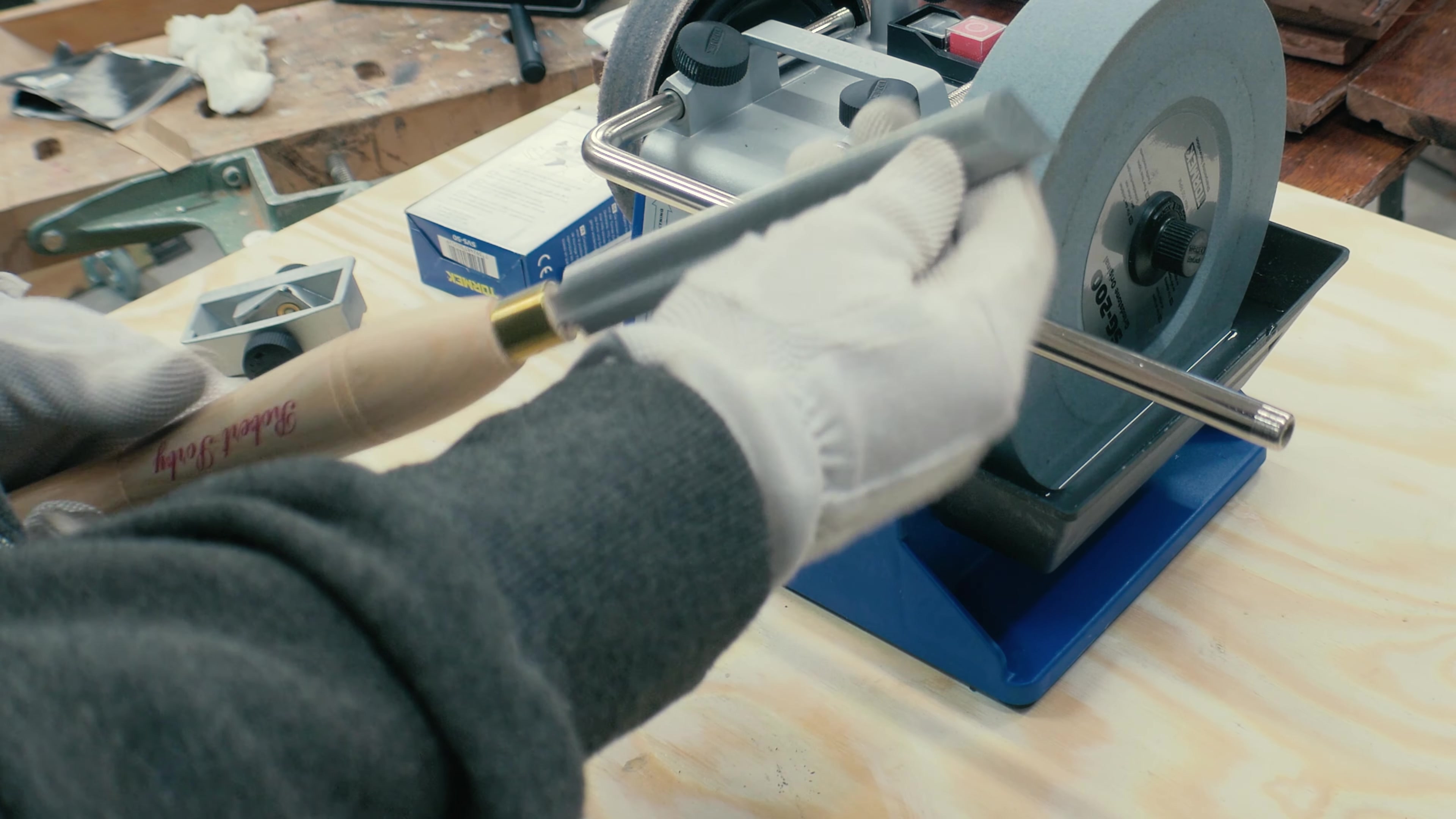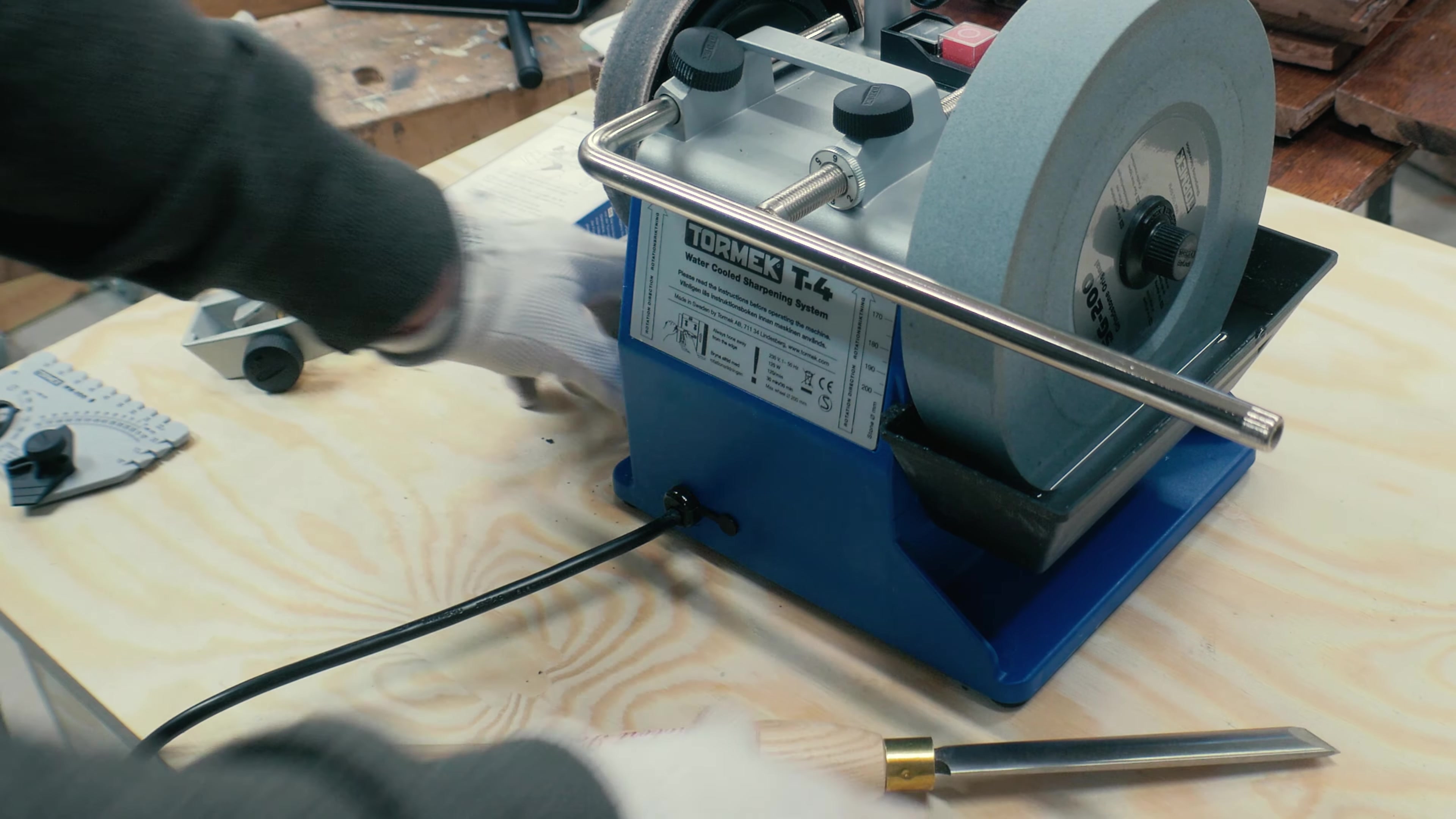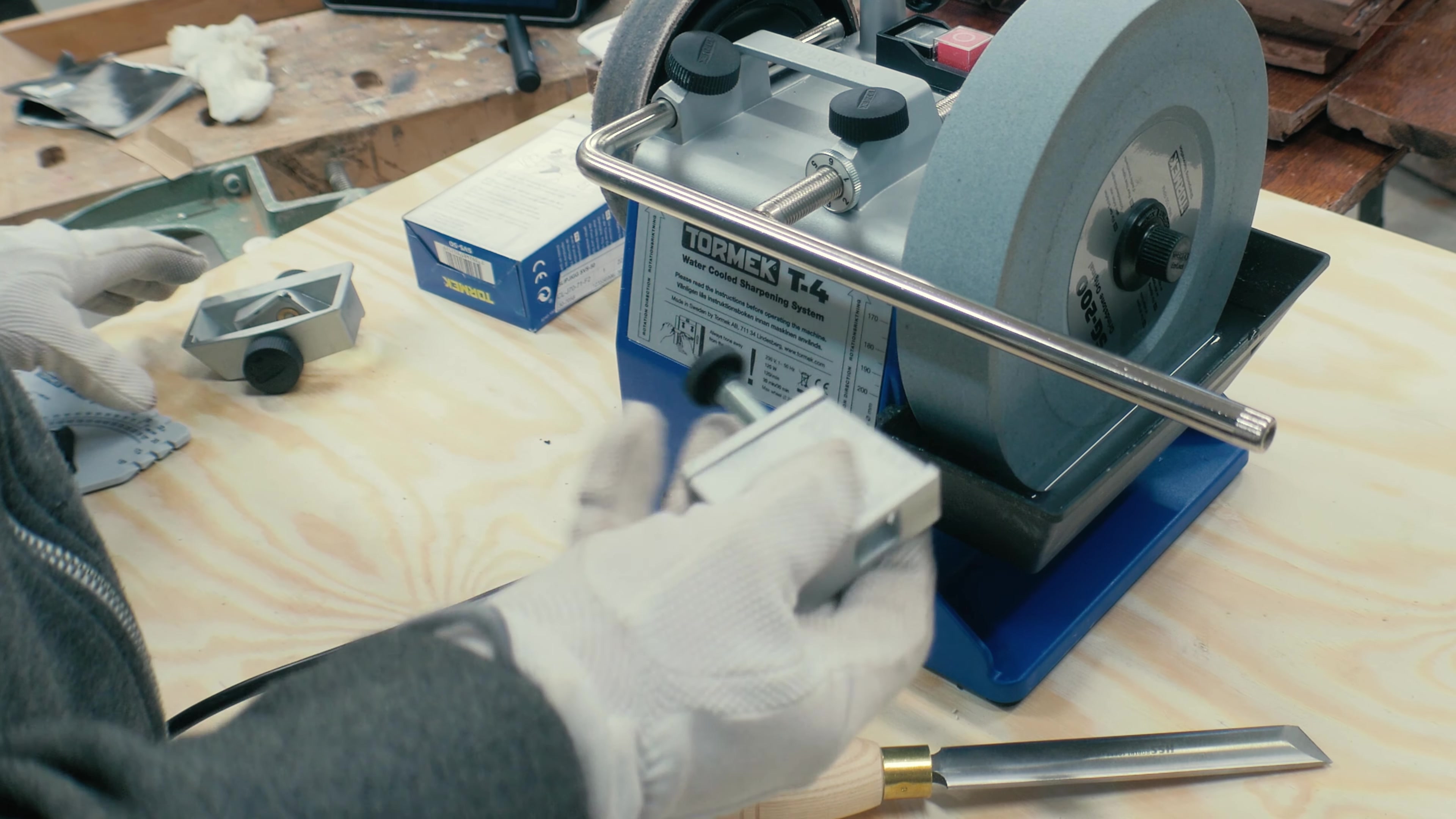To get the correct angle on the skew chisel, we need to use this attachment on the jig.